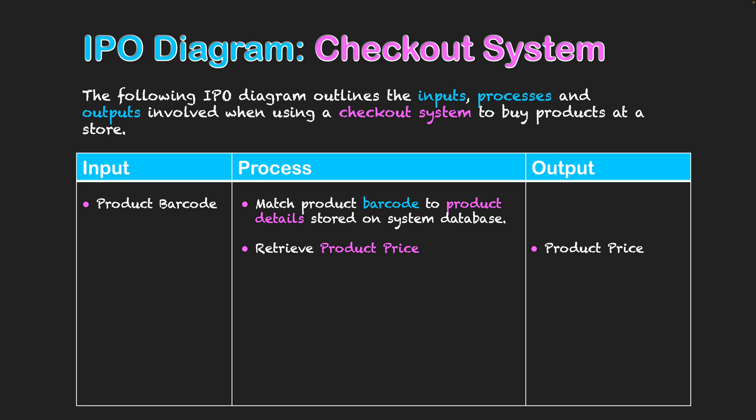Through retrieving the price, we have it displayed on screen. So we've scanned the item and I can see how much that item costs on screen. Hopefully I already know how much it is when I'm intending to buy it, but this will confirm I've got the right product at the expected price. We need that as output for me to see as the user of the system.